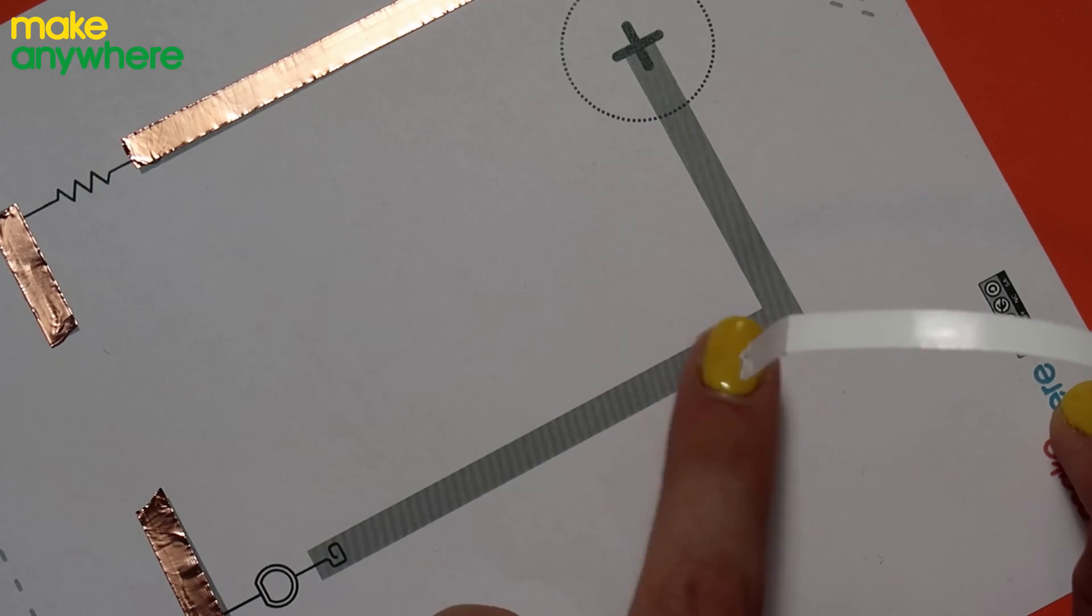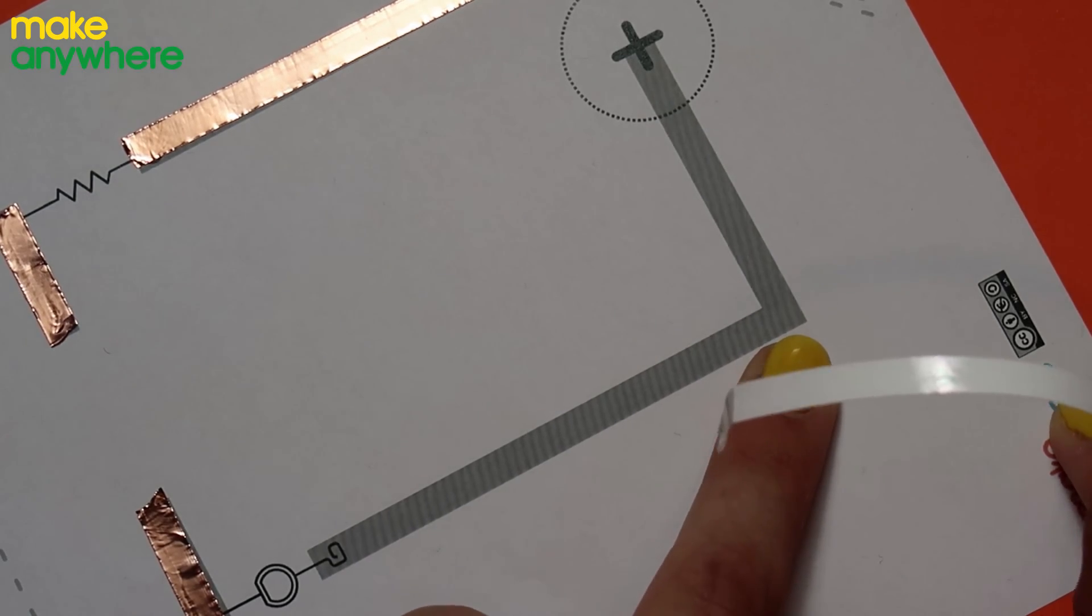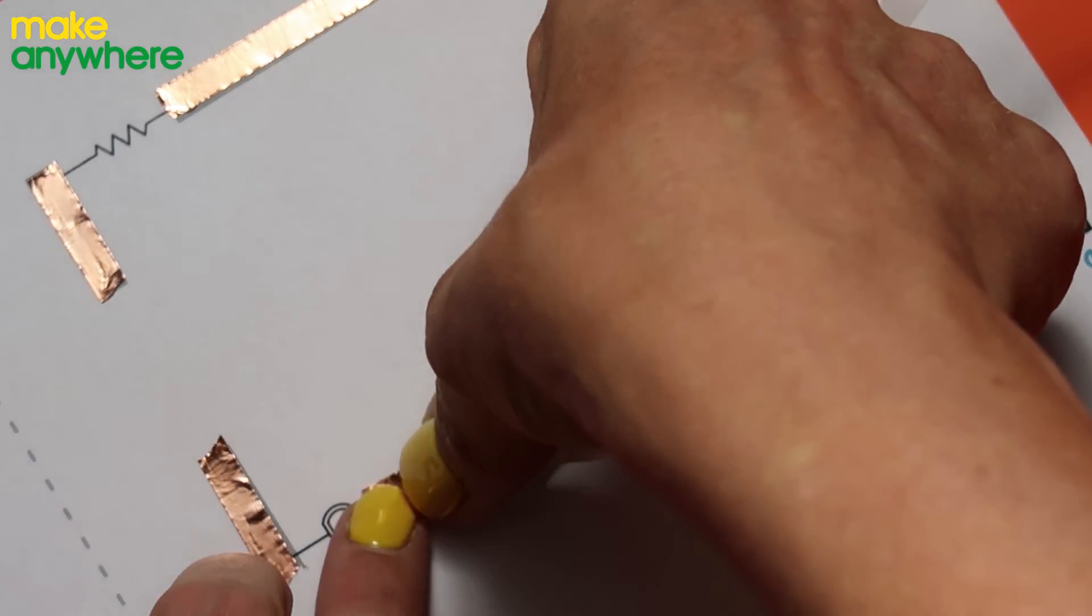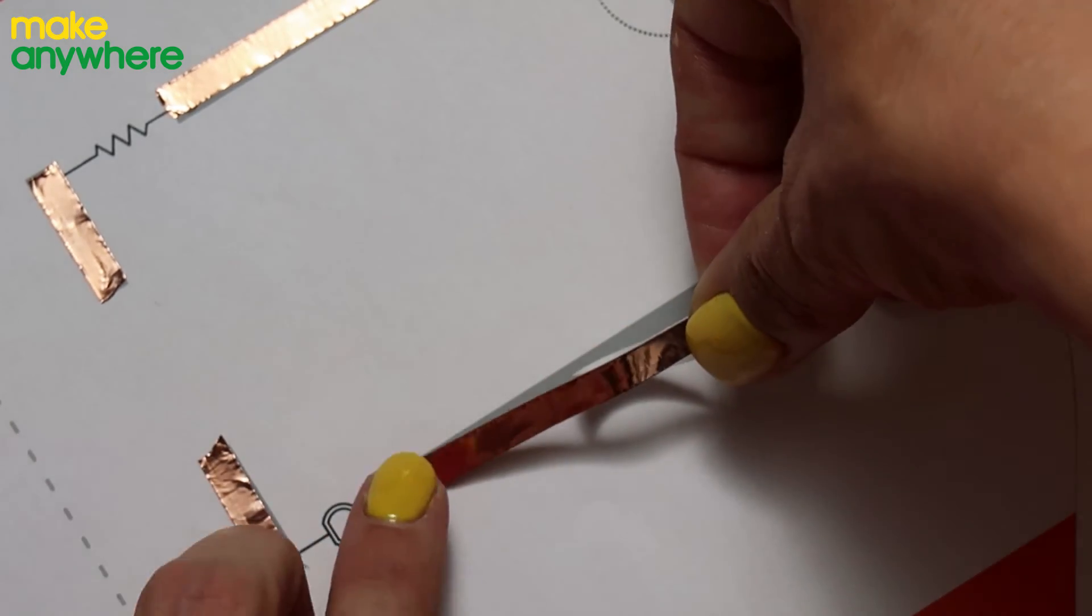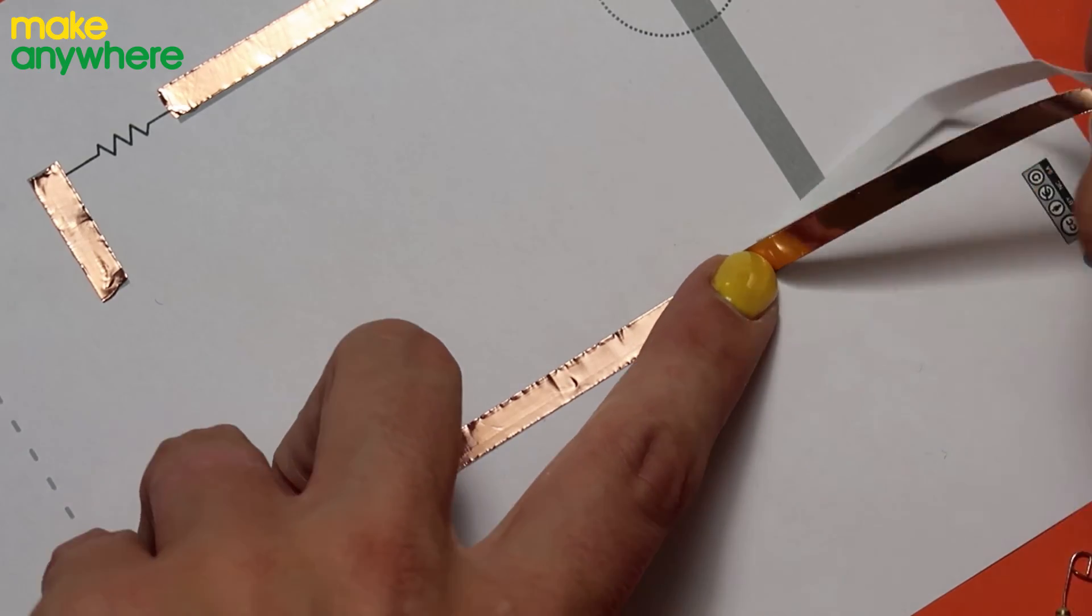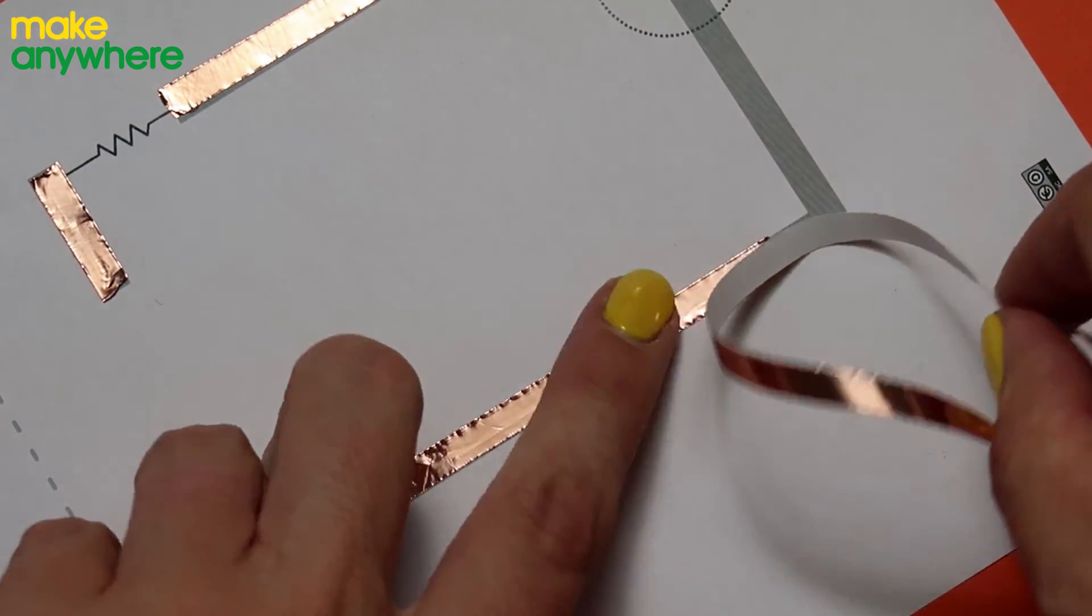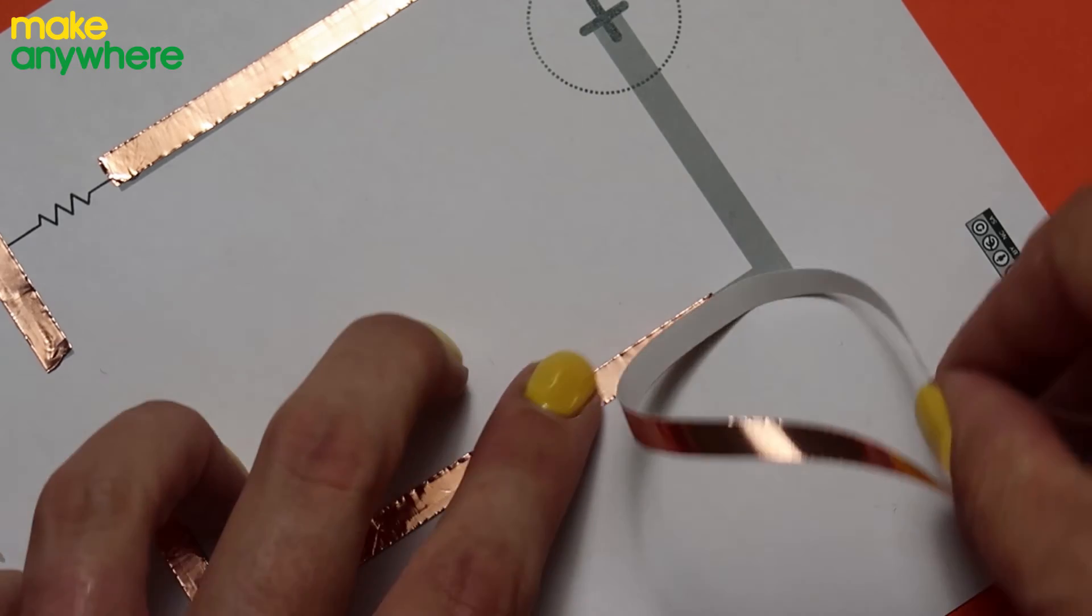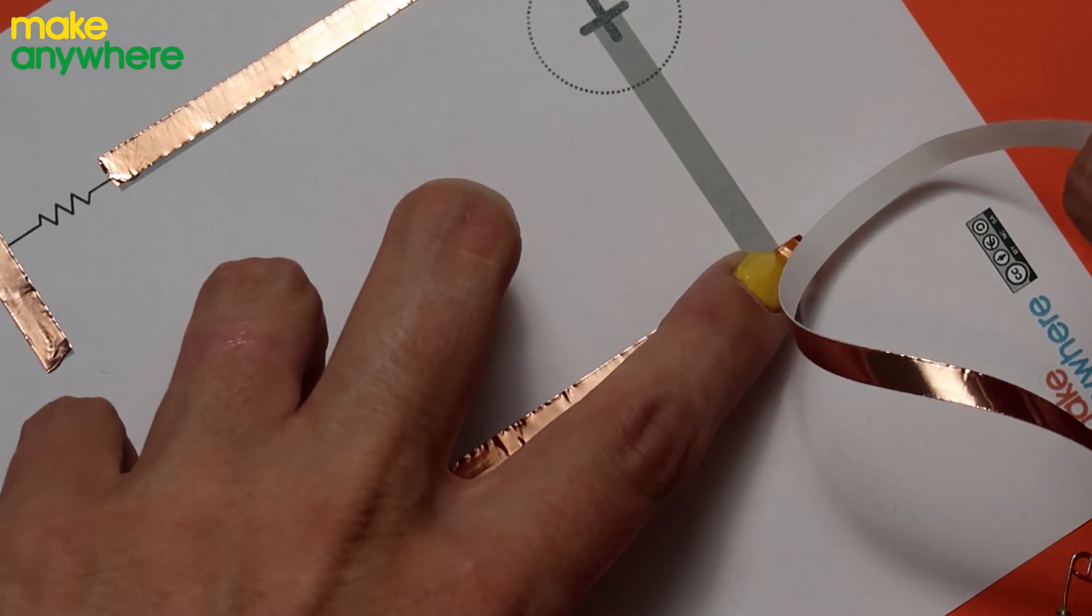It's got a corner so when we get to that I'm going to show you how to do corners. When we're using copper tape we need to make sure that there's no rips or tears or breaks because that will create a break in our circuit and if that happens our LEDs won't light up. So I'm nearly at the corner. What I'm going to do is go all the way to the corner and then stop.